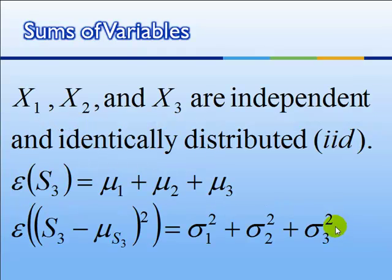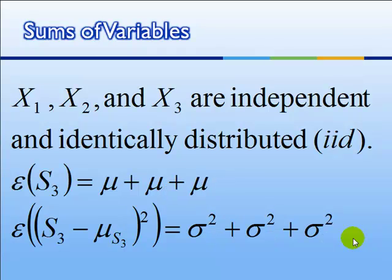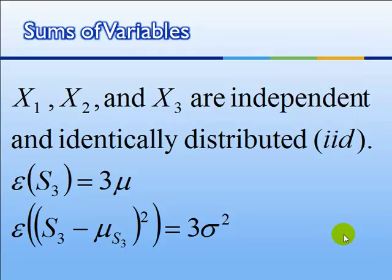If x1, x2, and x3 are independent and identically distributed — that is, they have the same mean, the same variance, and the same probability density functions — then we say that they are IID, independent and identically distributed. If this is the case, these three means are all the same and these three variances are also all the same. So the expected value of the sum is the sum of the same mean, and the variance of the sum is the sum of the three variances. In more compact form: we have three variables added together, the expected value or mean of the sum is 3 times the mean, and the variance of the sum is 3 times the variance of the original distributions.